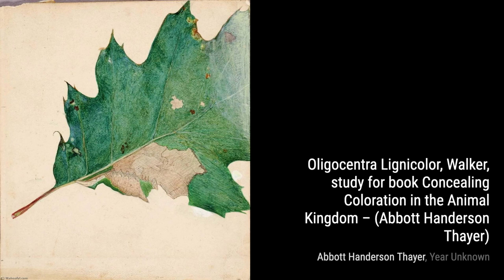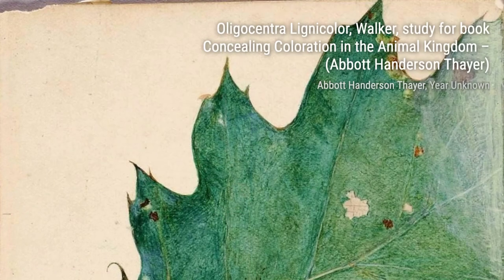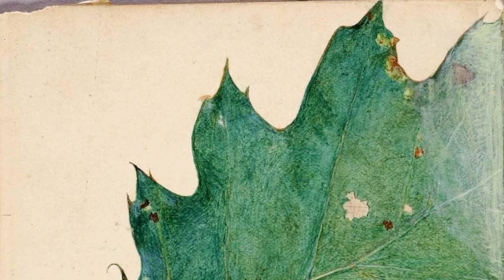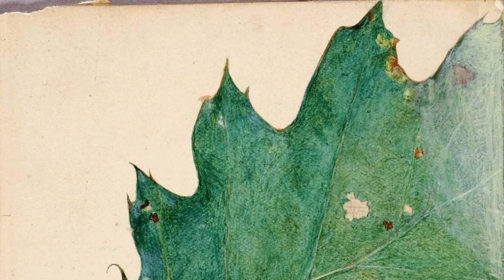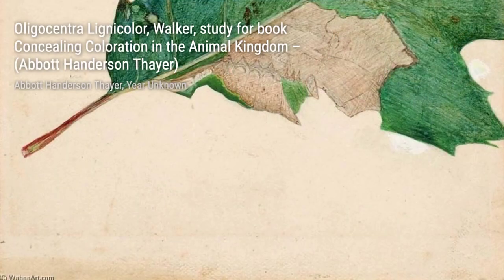Next, we have Girl in White, also known as Margaret Green. Thayer's daughter serves as the model for this painting, and her ethereal presence is beautifully captured in the white dress against a soft background.